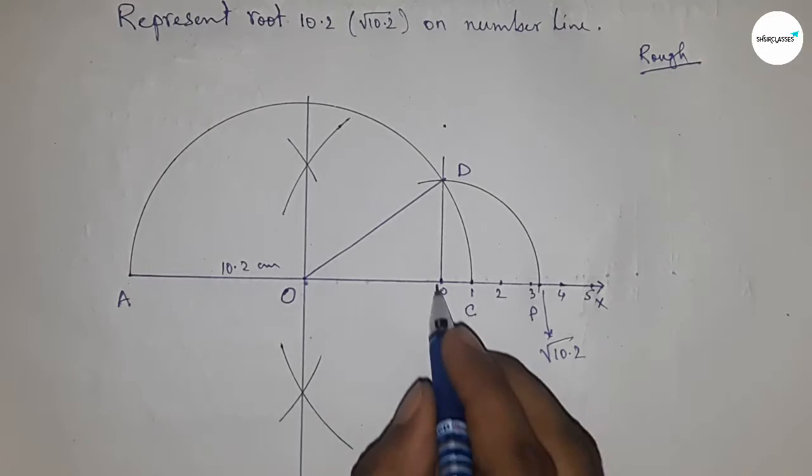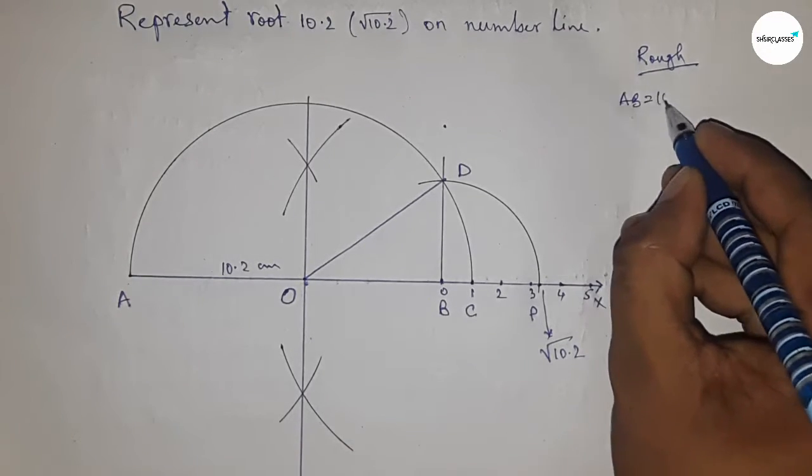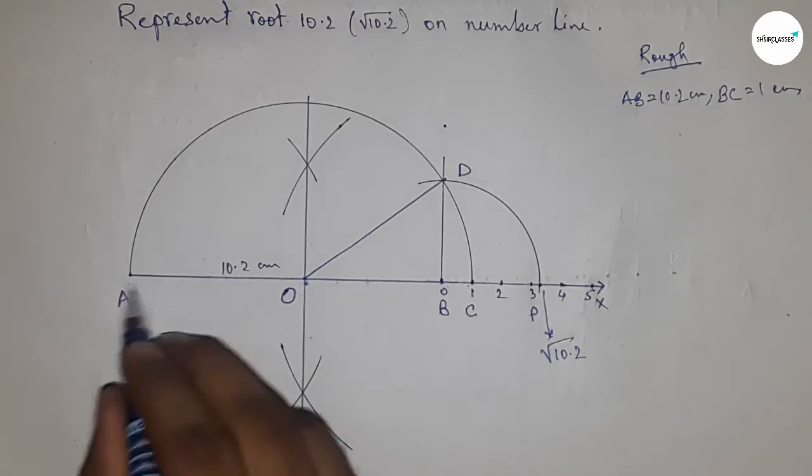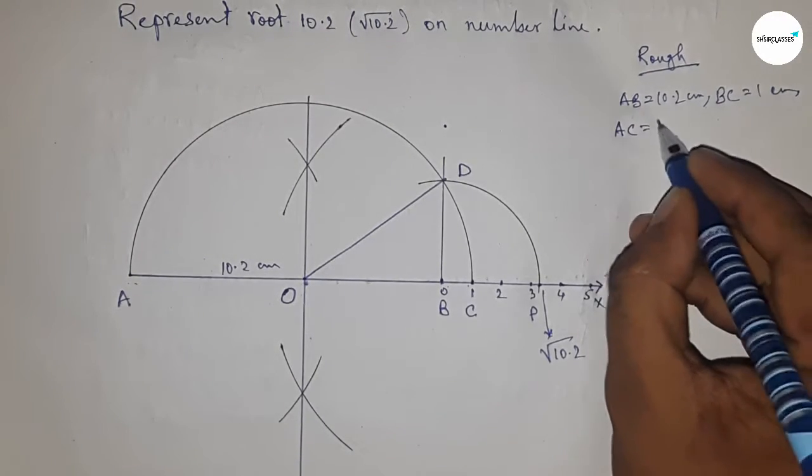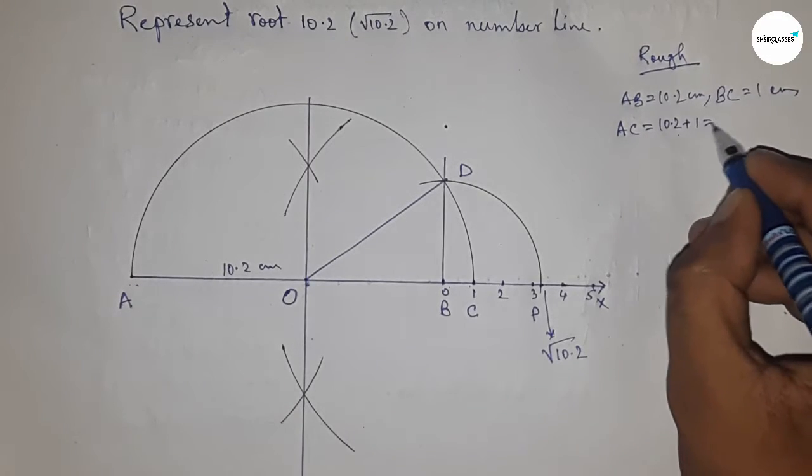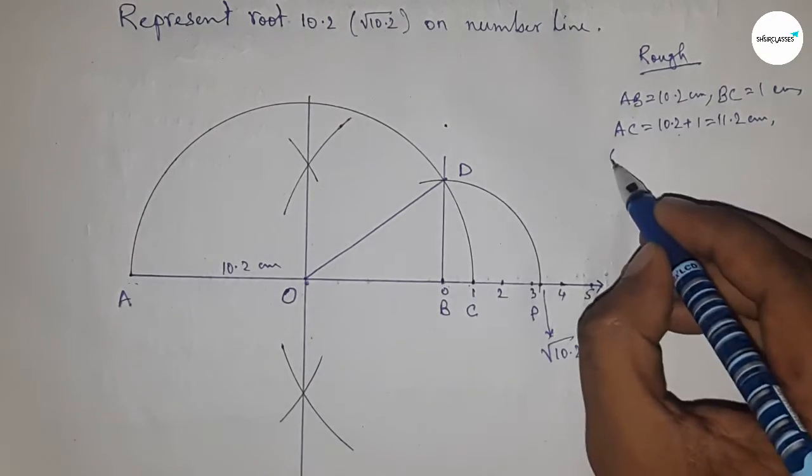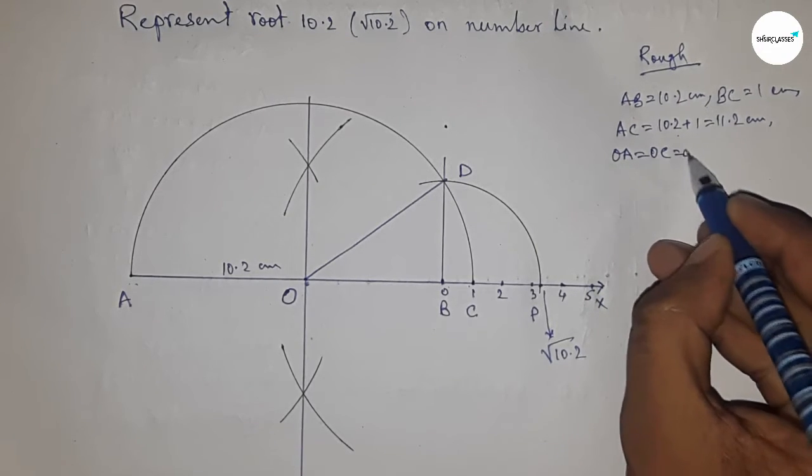Now for the back calculation: given AB equals 10.2 centimeters and BC equals 1 centimeter, we can write AC equals 10.2 plus 1, which is 11.2 centimeters. The radius OA, OC, and OD equal AC divided by 2, which is 5.6 centimeters.